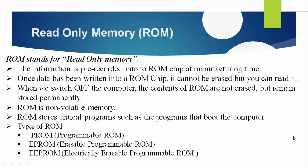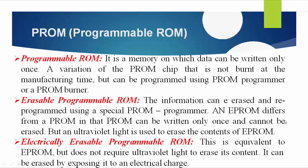The types of ROM are: PROM, EPROM, and double EPROM. PROM stands for Programmable Read-Only Memory. EPROM stands for Erasable Programmable Read-Only Memory. Double EPROM stands for Electrically Erasable Programmable Read-Only Memory. These are the three types that come under Read-Only Memory.